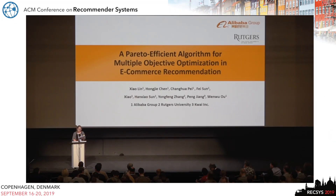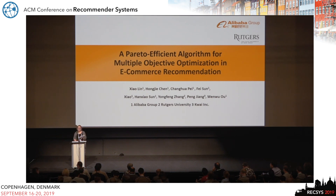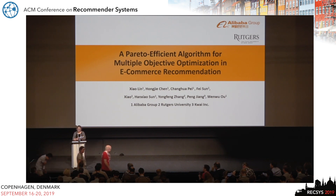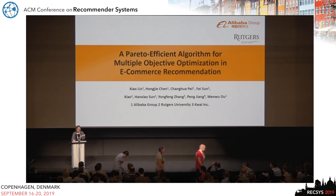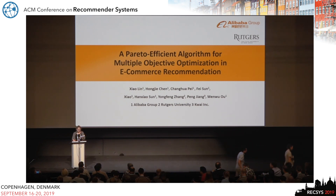We are now going to hear about ProMetal: an efficient algorithm for multiple objective optimization in e-commerce recommendations. This talk will be given by Chow Lin, and it is a collaboration between Alibaba and Rutgers University.